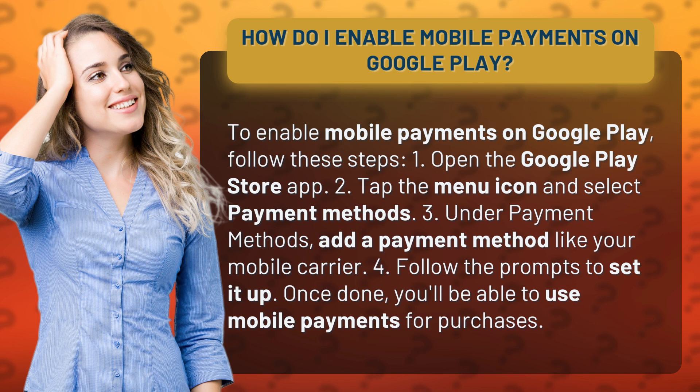3. Under payment methods, add a payment method like your mobile carrier. 4. Follow the prompts to set it up. Once done, you'll be able to use mobile payments for purchases.